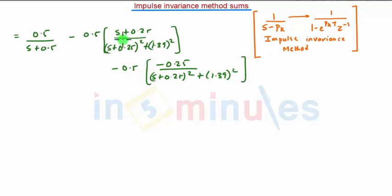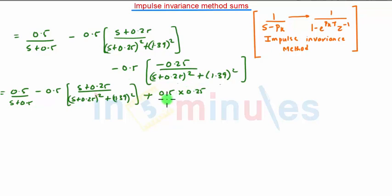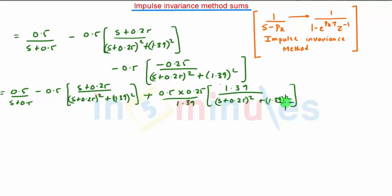Now this is of the form (s plus a) upon (s plus a) whole squared plus b squared, and we have to make this term in the form of b upon (s plus a) whole squared plus b squared. So we will do some modifications: 0.5 upon (s plus 0.5) minus 0.5 bracket (s plus 0.25) upon (s plus 0.25) whole squared plus 0.5 into 0.25. We make these terms common and multiply and divide by 1.39, that is b, to get 1.39 upon (s plus 0.25) whole squared plus 1.39 squared.